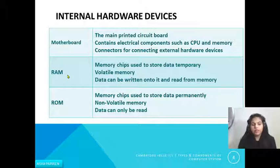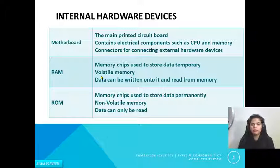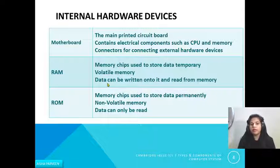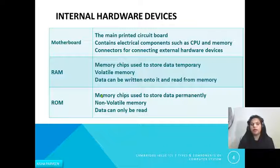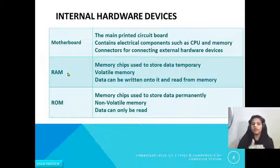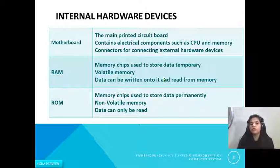The next internal hardware device is RAM — a memory chip used to store data temporarily. It is a volatile memory, meaning whenever you turn off your computer all the data in RAM will be lost. Data can be written onto it and read from it. For example, when I open a program, its instructions are temporarily stored in RAM. When I close that program those instructions are removed, and when I turn off my computer all instructions from RAM are removed.